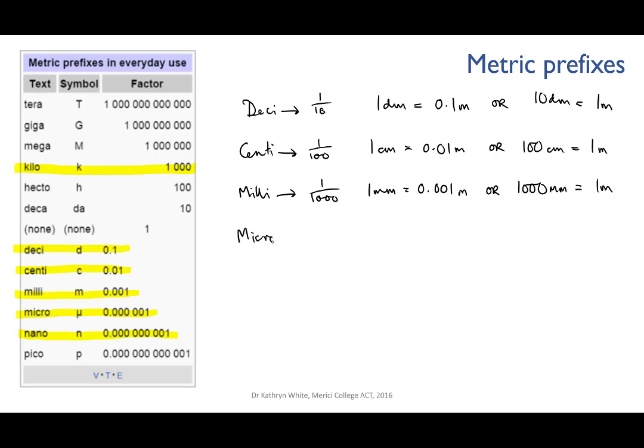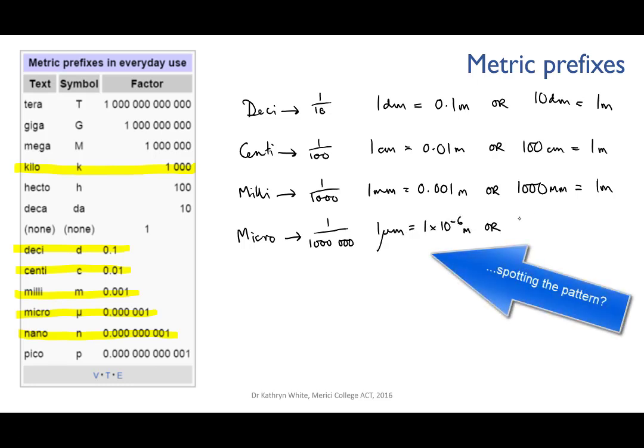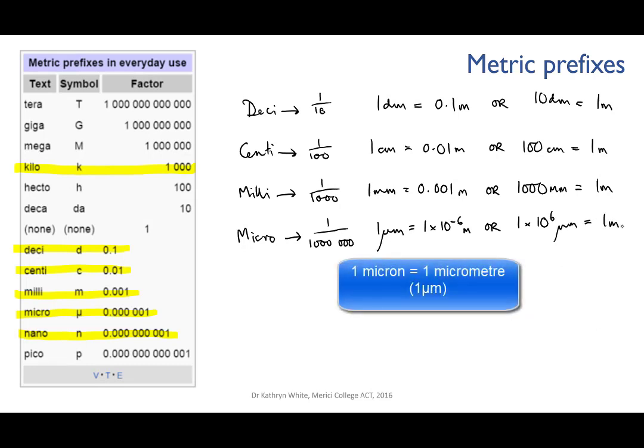Micro means a millionth. One micrometre equals one times ten to the minus six metres. Or we can say that there are one million micrometres in a metre. Micrometres are also sometimes called microns.